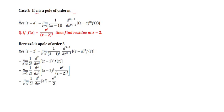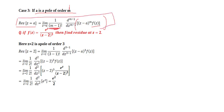Case 3: if 'a' is a pole of order m, the residue at z equal to 'a' is given by: limit as z→a of 1/(m−1)! · d^(m−1)/dz^(m−1) of [(z−a)^m · f(z)]. That is, we differentiate (m−1) times. For example, if f(z) = e^z / (z−2)³, find the residue at z = 2.